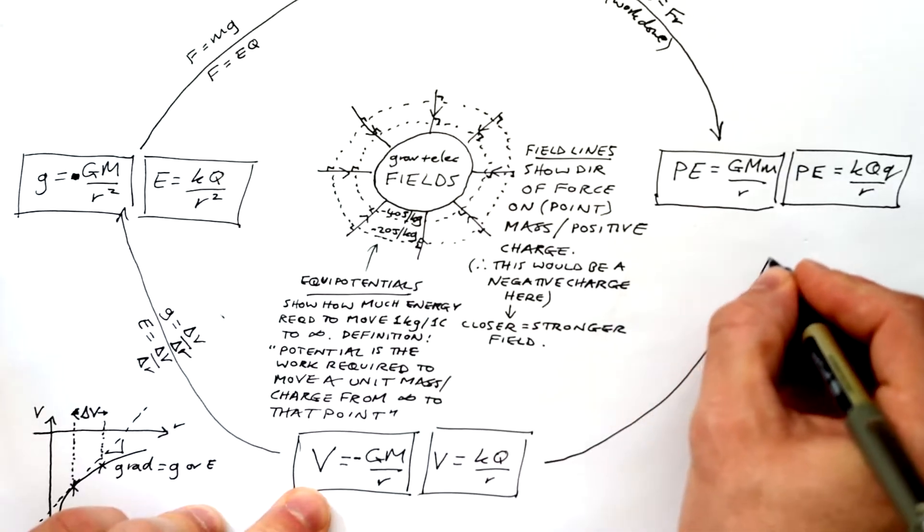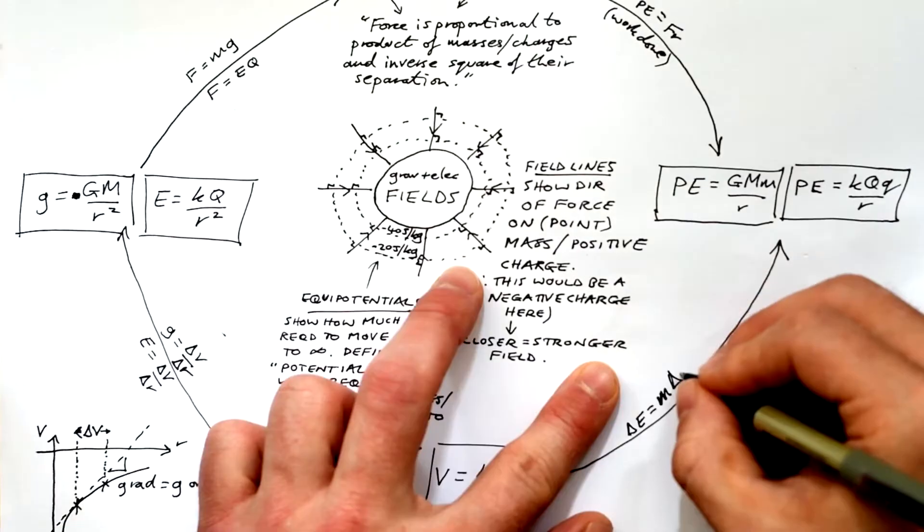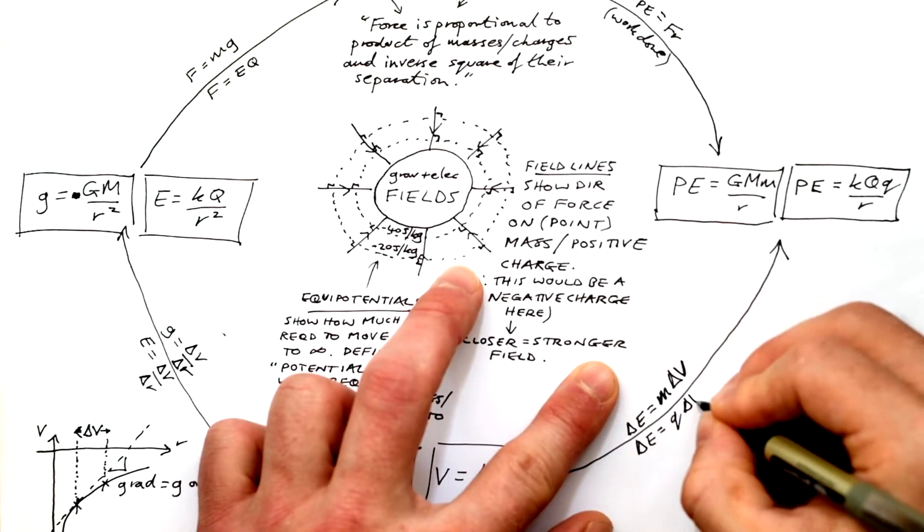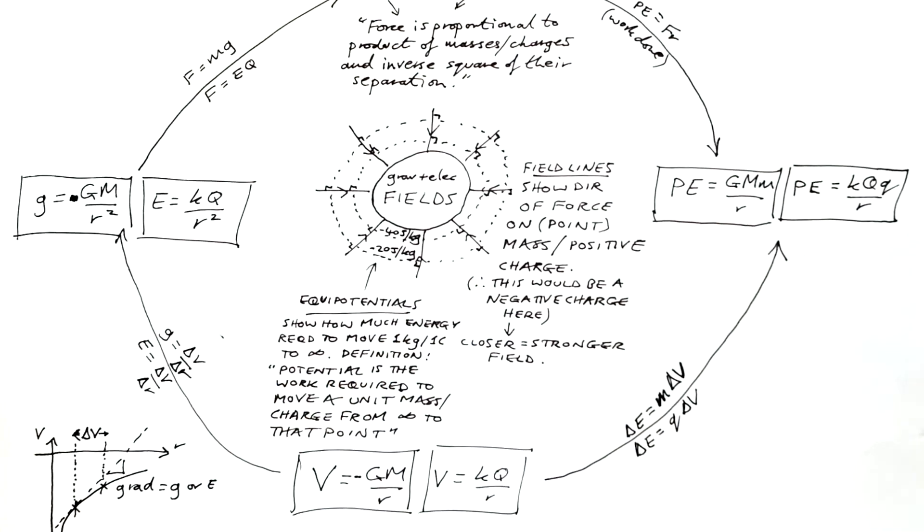Now we can go full circle as well. We can get from potential to energy. We do change in potential times the mass that we are actually moving or times by the charge that we're actually moving. And that's because potential is joules per kilogram or joules per coulomb. It tells us how much energy a kilogram or coulomb would have. So what we have to do then is times by mass or charge to get the actual joules.